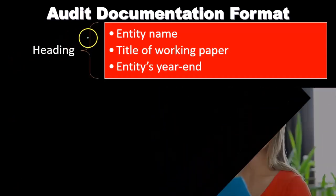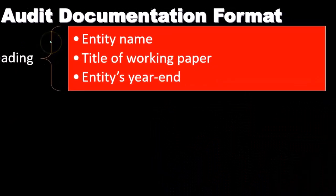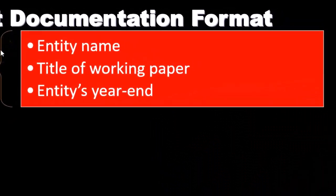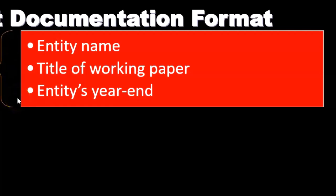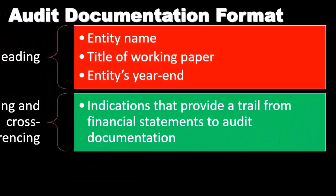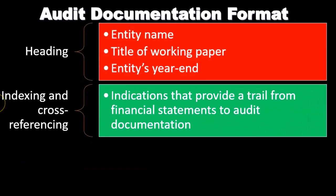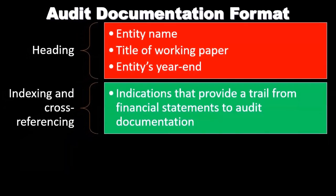We often have a heading which includes the entity name and the title of the working paper, which gives us an idea of what the working paper is trying to do or what evidence it's providing. We also include the entity's year end, so we know what period this working paper applies to. Then we have indexing and cross-referencing.